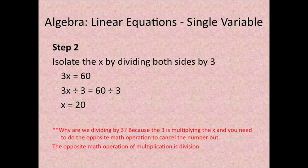Why are we dividing by 3? Because the 3 is multiplying the x and you need to do the opposite math operation to cancel the number out. The opposite math operation of multiplication is division.